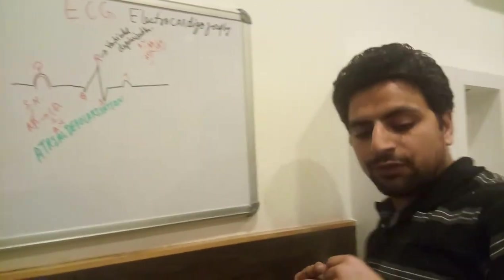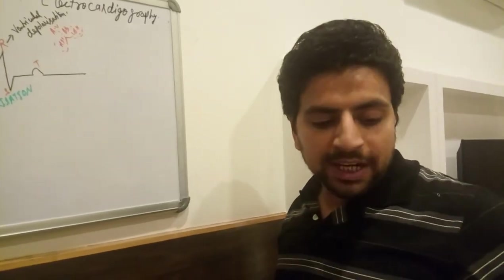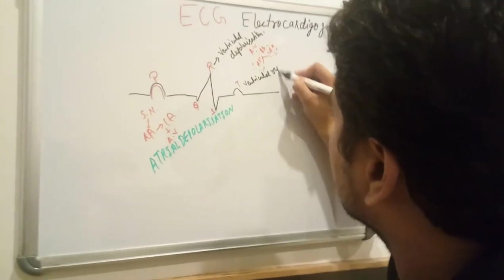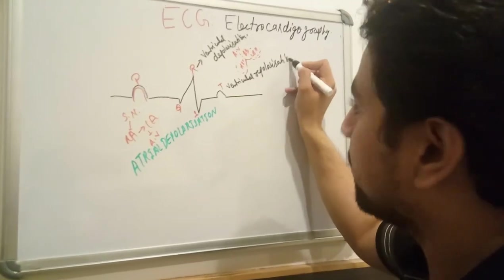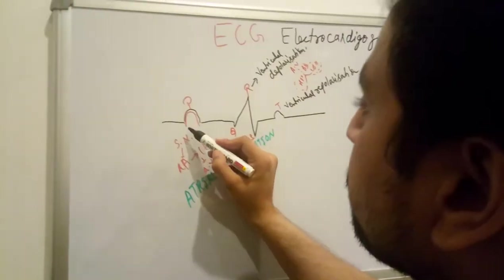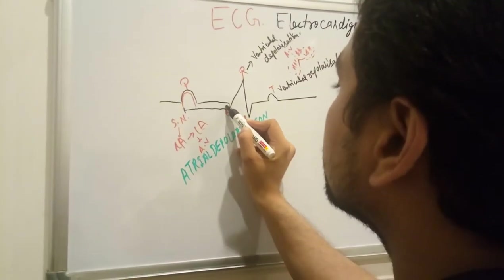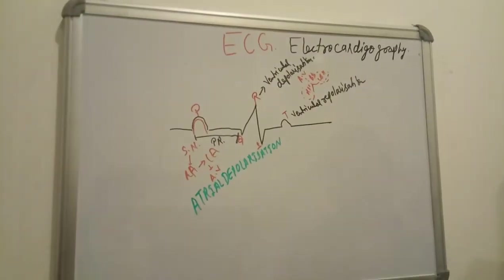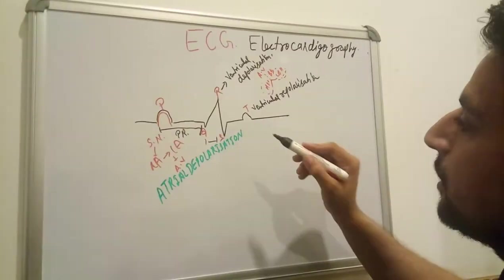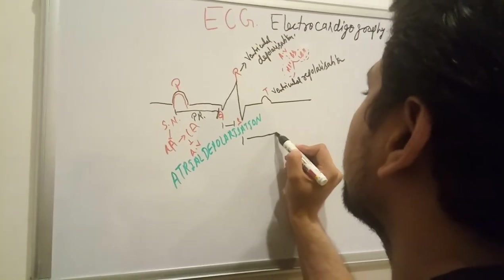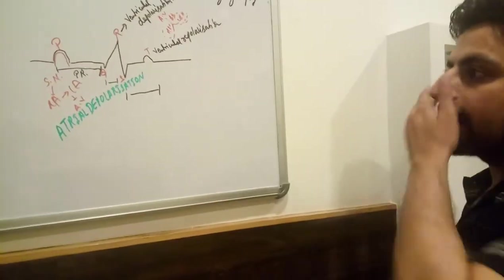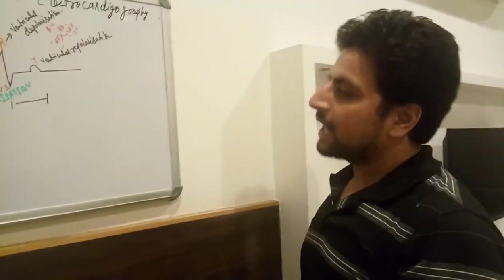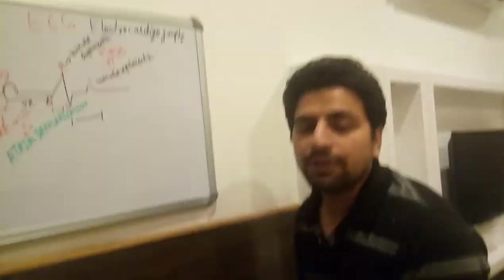After the QRS complex, the T wave is formed. The T wave represents ventricular repolarization. From the beginning of P to the beginning of Q is known as the PR interval. After QRS, from the S wave to the end of the T wave is known as the ST segment.